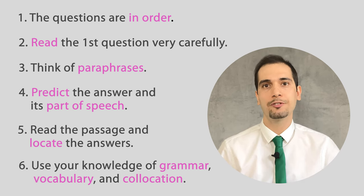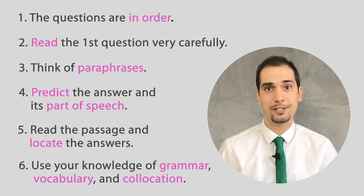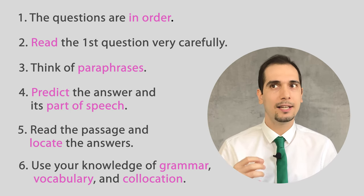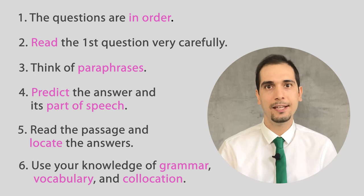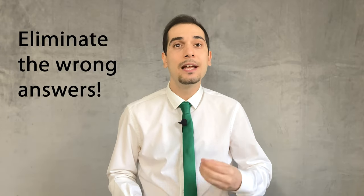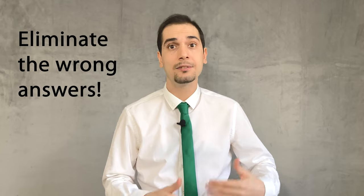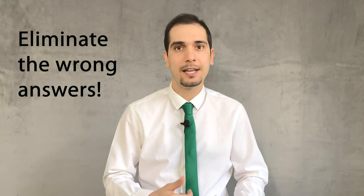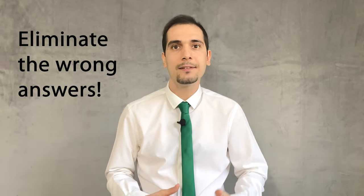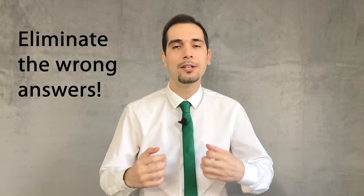Something different here is that you have been given options to choose from. You have to use your knowledge of grammar, vocabulary, and collocation to eliminate the wrong answers. For example, for number one, if I know I need a noun, and two of the seven options are not nouns, I can easily eliminate those and limit my choices. This is going to help you dramatically.